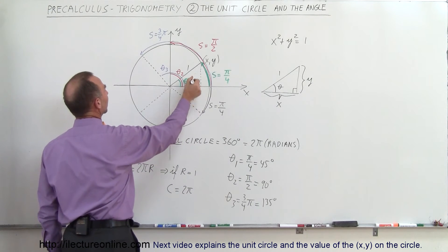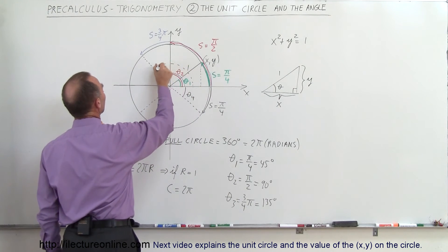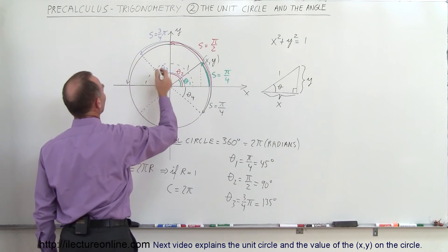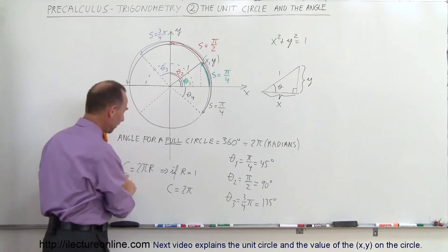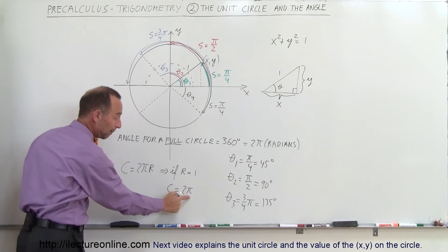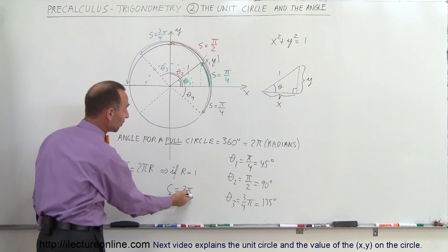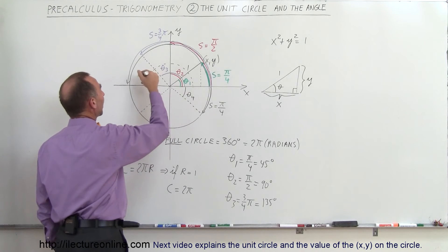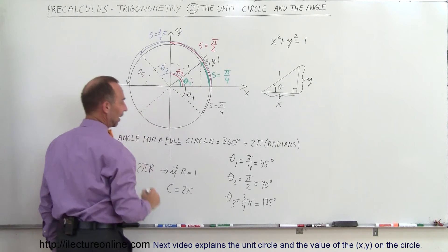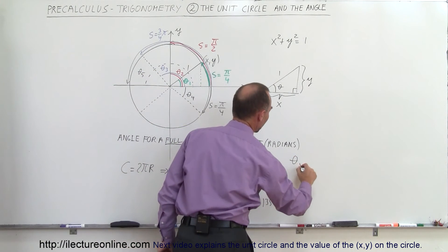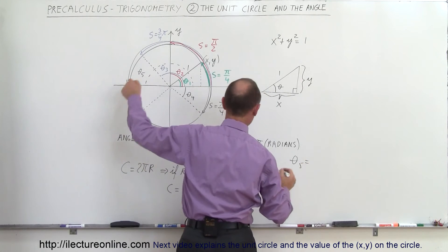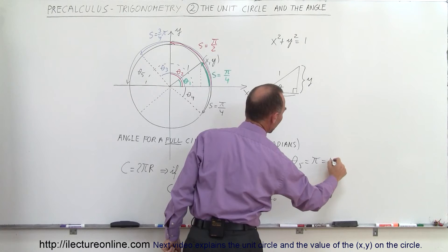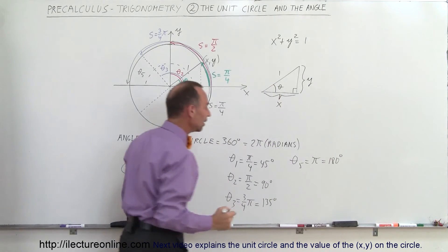If I continue going all the way around halfway around the circle, that is half the circumference — half of 2 pi is simply pi. That means the angle, theta sub 5, is equal to half a circle, which is half of 2 pi, or pi radians, which is equal to 180 degrees.